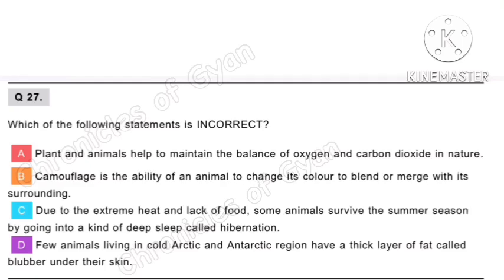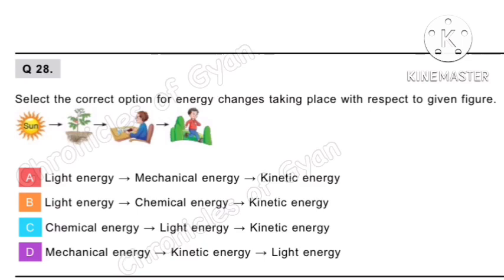Question 28. Select the correct option for energy changes taking place with respect to the given figure. The sun is the source of light energy, which is converted into chemical energy and then kinetic energy. Option B is the correct answer.